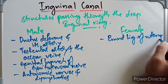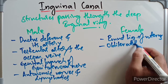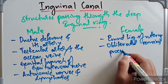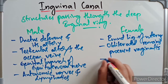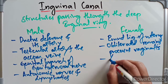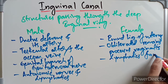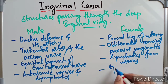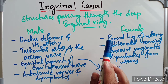In the female, the structures passing through the deep inguinal ring are: the round ligament of the uterus, the obliterated remains of the processus vaginalis, lymphatics from the uterus, and the genital branch of the genitofemoral nerve.